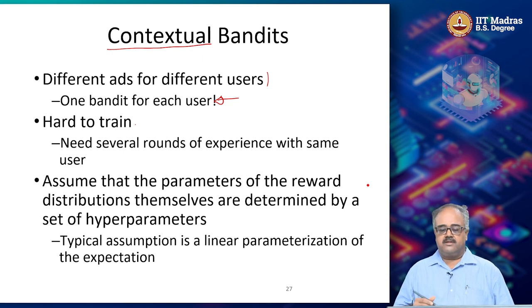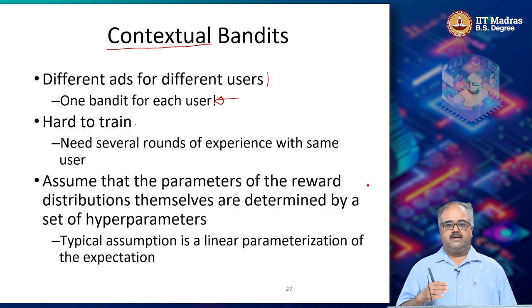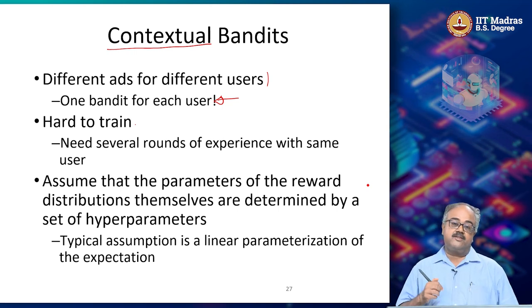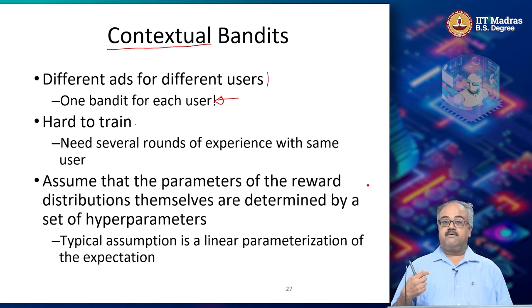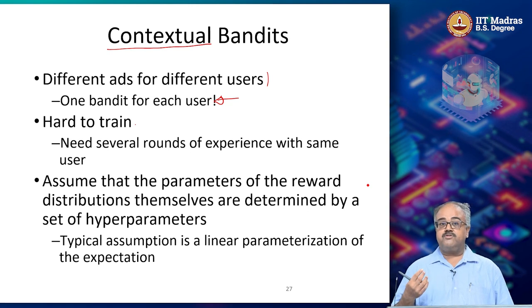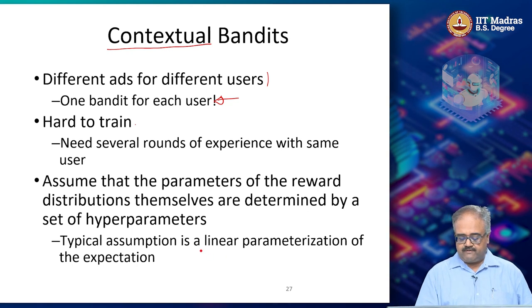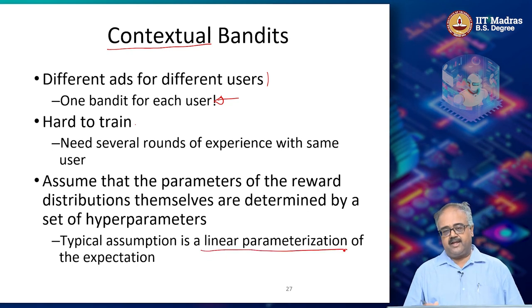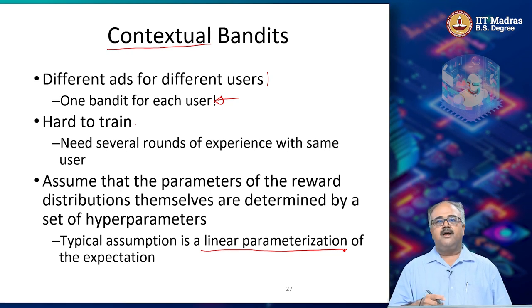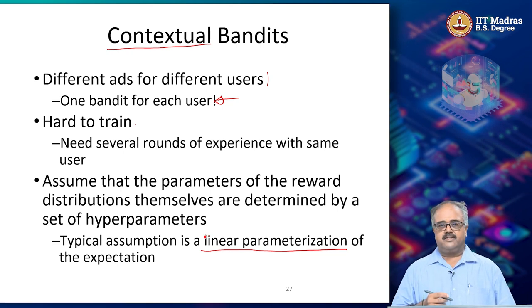So each arm — let us say I have 1000 arms — each arm is going to have a mu and a sigma associated with its rewards. I am saying that this mu and sigma are a function of some attributes of the users coming to my page. This function we typically assume is linear, but you could use other forms as well — more complicated functions. The most popular one is something called linear parameterization.